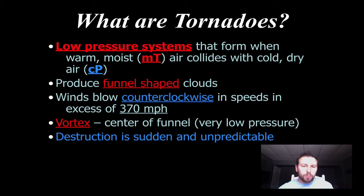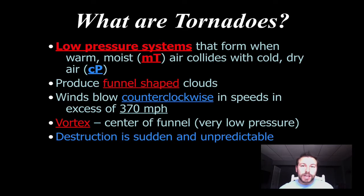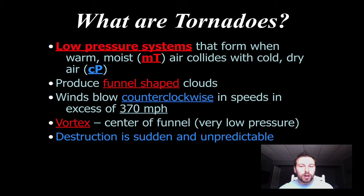Tornadoes are nothing more than low-pressure systems. They form when warm moist air coming up from near the Gulf collides with cold continental polar air that comes down from Canada. They produce the typical funnel-shaped clouds most people associate with tornadoes, and the winds blow counterclockwise. These winds could be in excess of about 300 to 350 miles per hour — extremely fast winds.